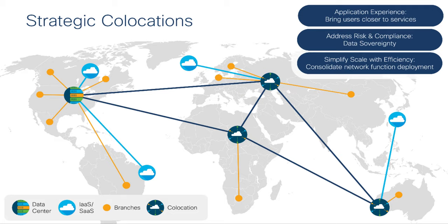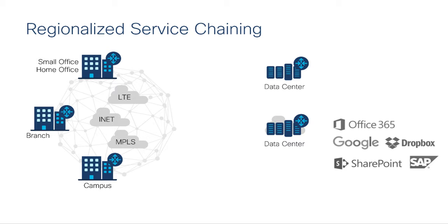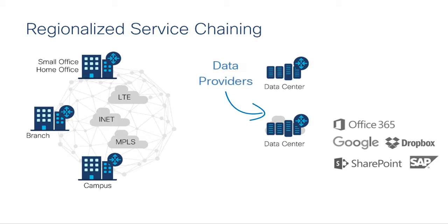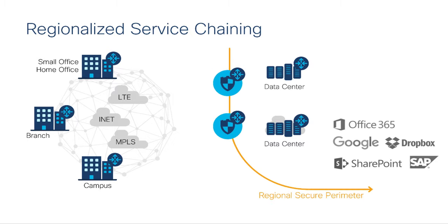So where does Cloud onRamp for Colocation fit into this? On the left side of the drawing, we see all the users, devices, and things — the data consumers. On the right side, we see all of the data providers. In the middle, we have the cloud edge. Cloud onRamp for Colocation lives inside the co-location facility at this cloud edge, at the demarcation point between users and the data that they consume.